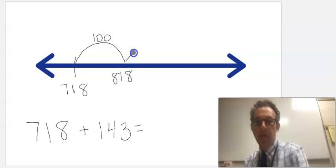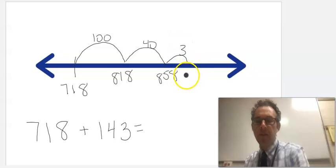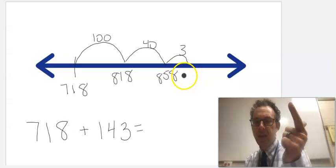I'm going to jump by 40 to get to 858, and all I have left is a jump of 3. And 858 plus 3 is 859, 860, 861.